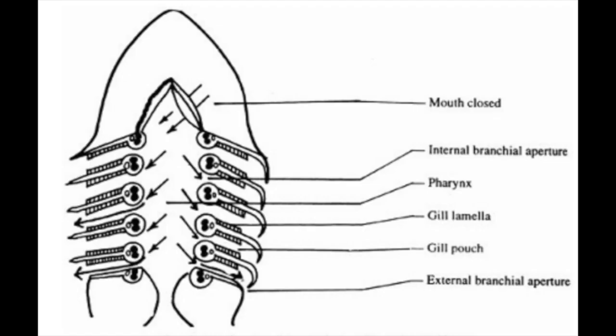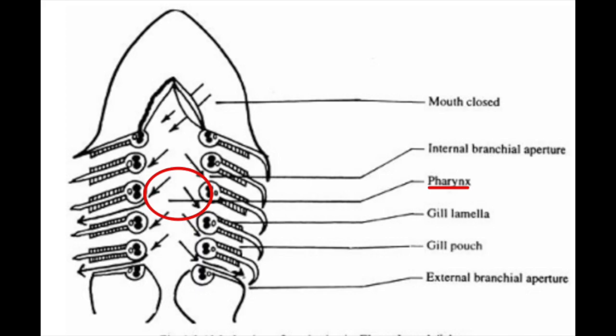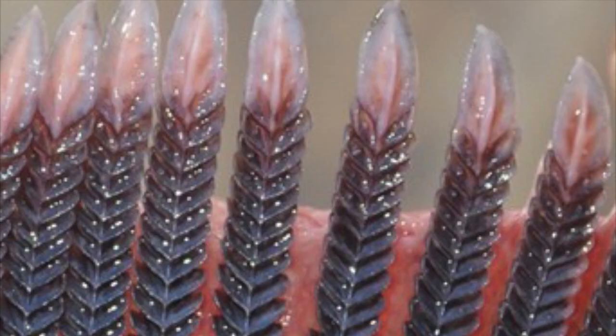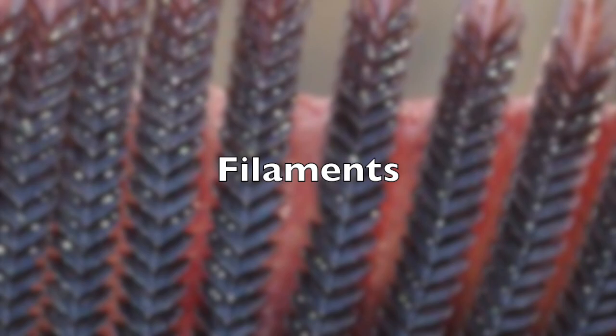A fish's respiration is functioned by their gills. Most fish exchange gases using gills located on either side of the pharynx, which is basically their airway. Gills are made up of feathery, thread-like structures called filaments. Each filament contains a network of fine capillaries.